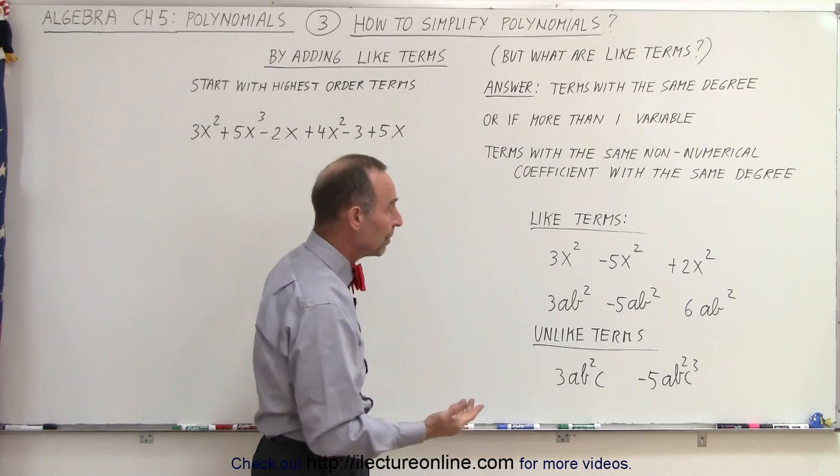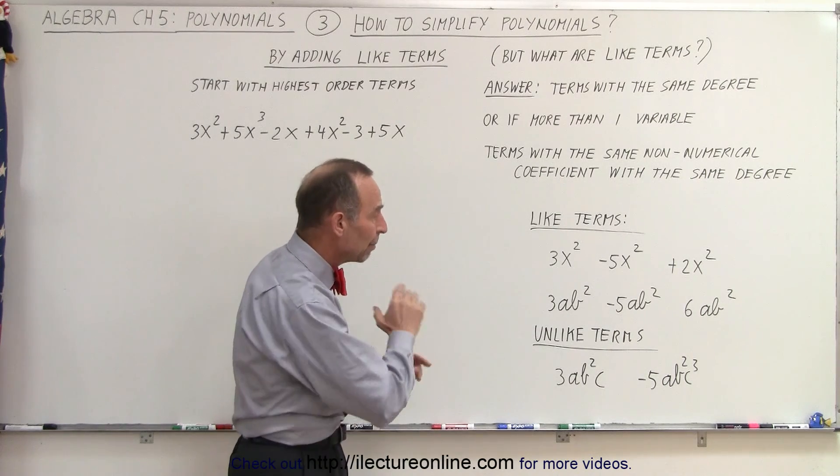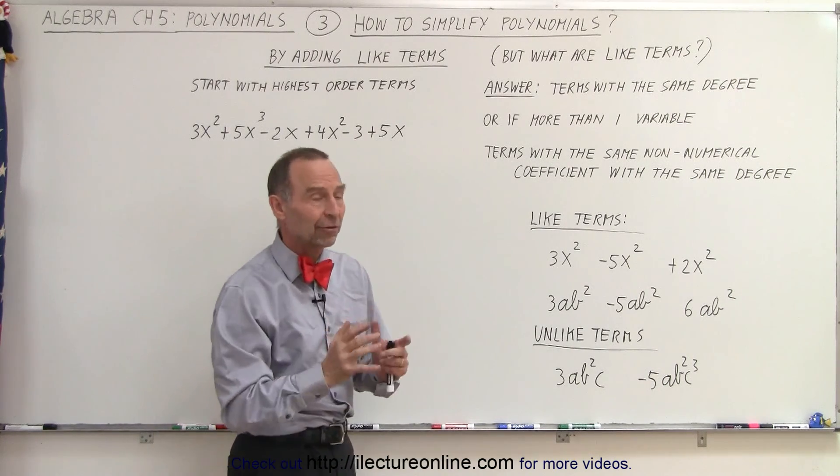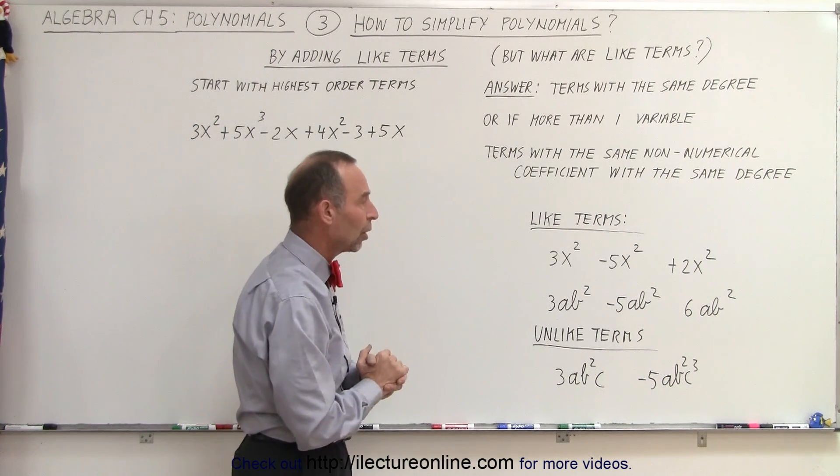So a has the first degree, b has the second degree, but it's the same for every term. Therefore, those terms are what we call like terms.